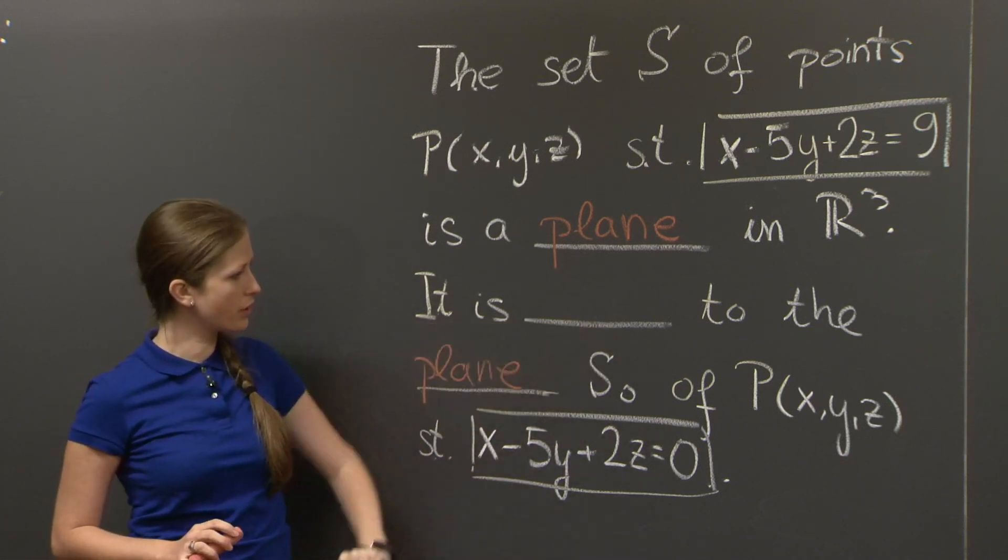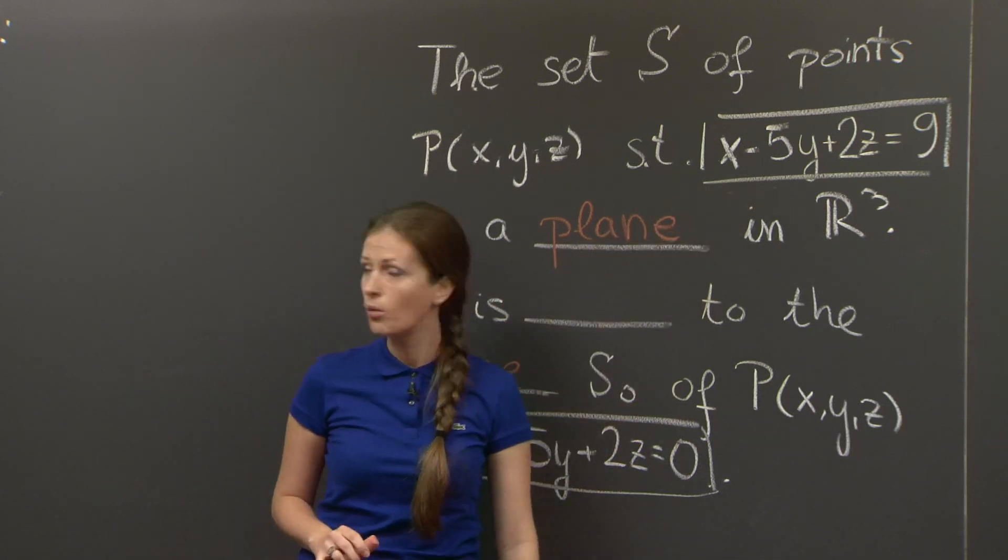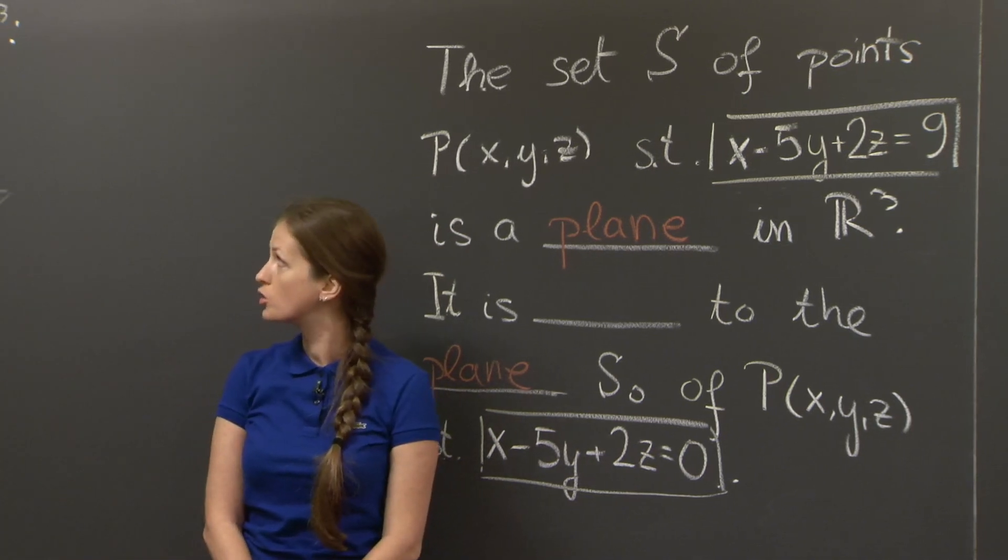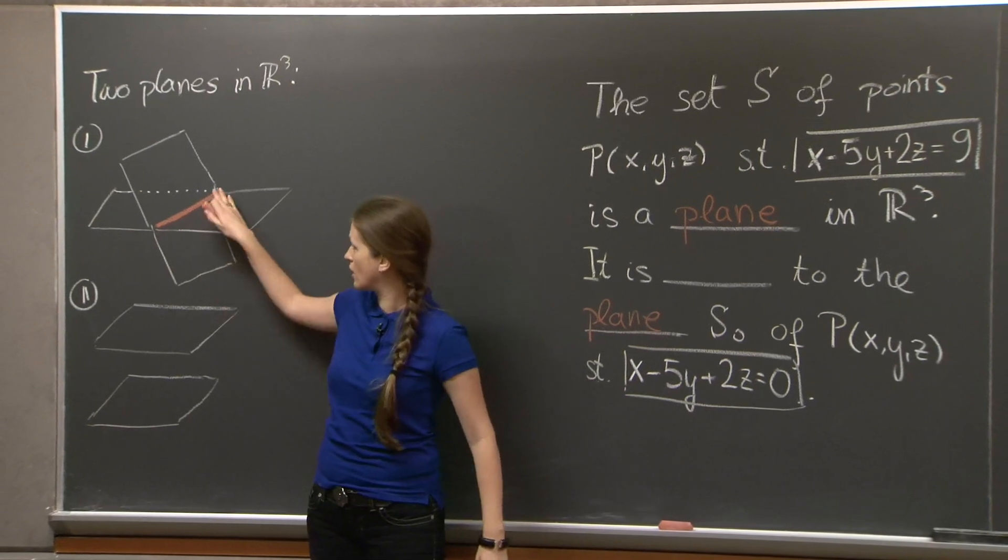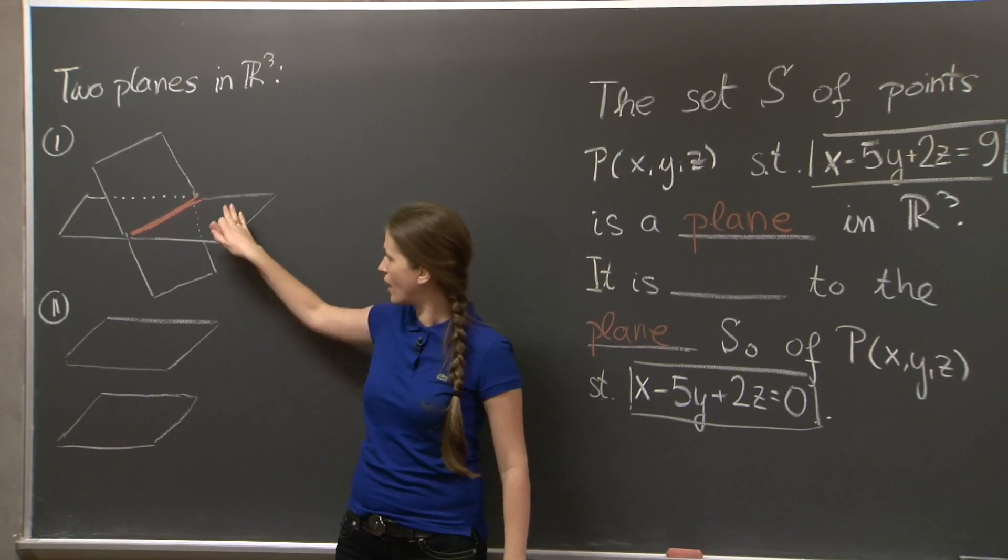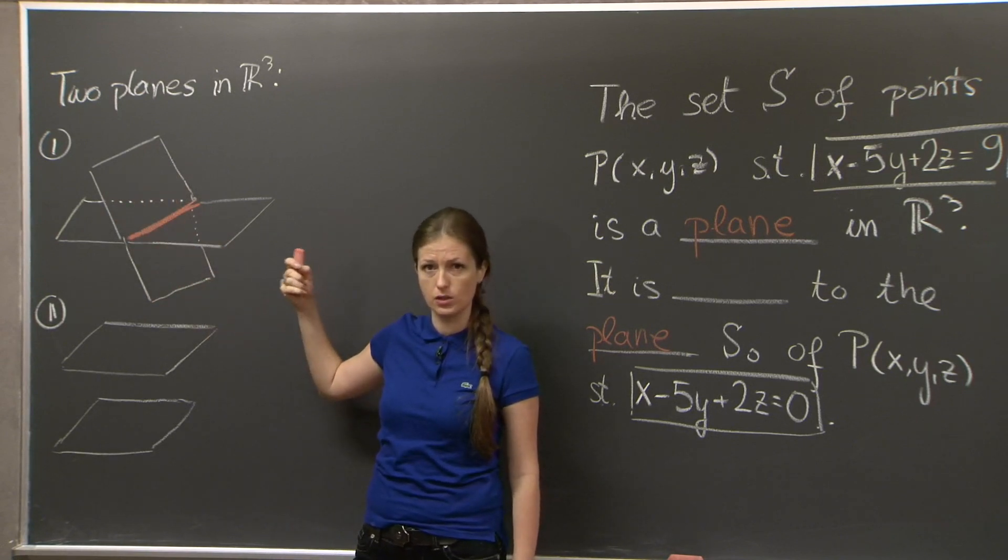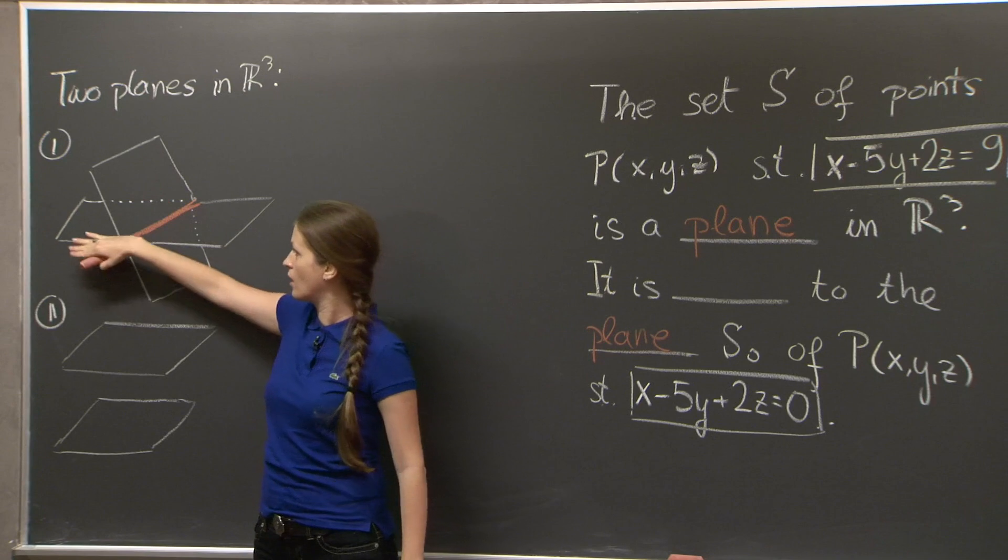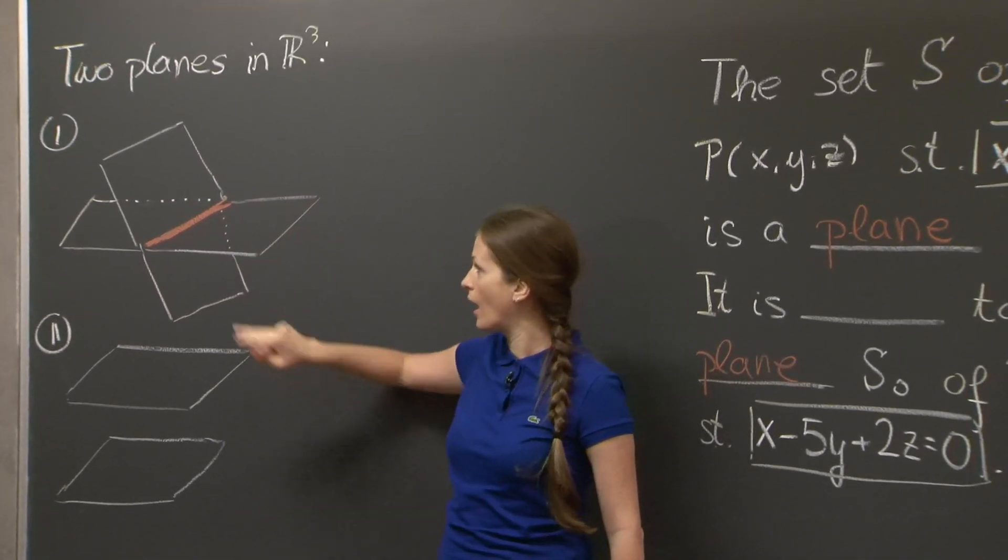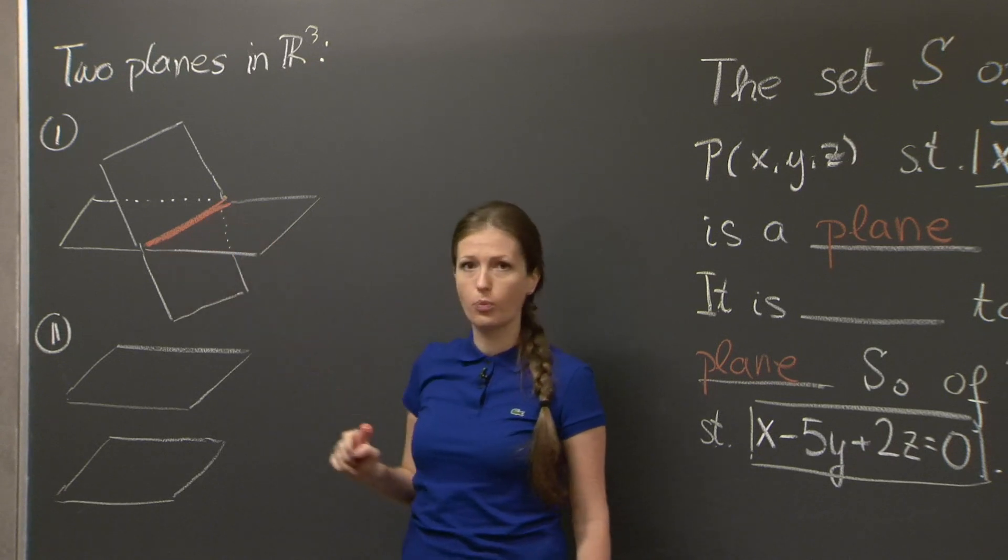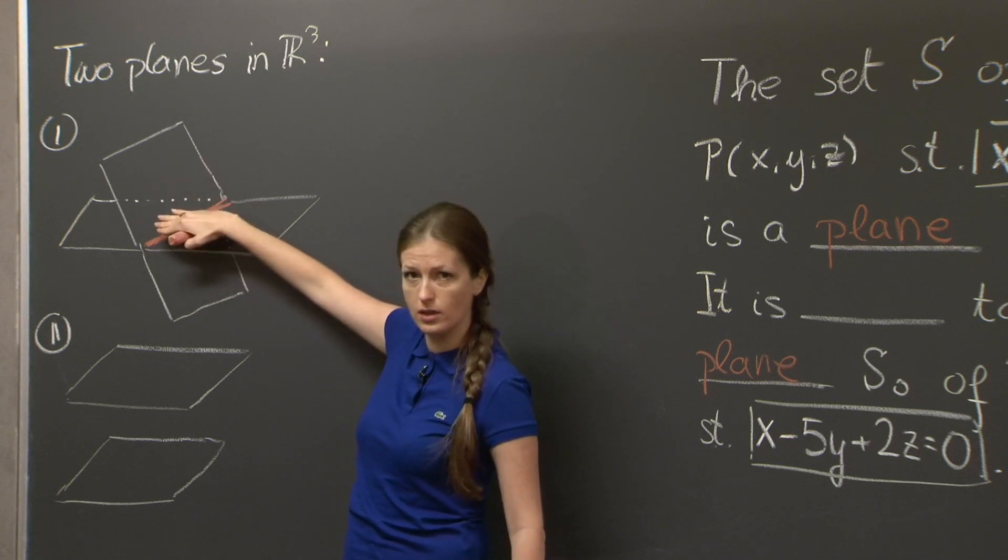Now what's the relation between S and S₀ if they're given by these two equations? Well, first let's look at the general positions in which two planes in R³ can be. First one is that they're intersecting along a line. All points on this plane satisfy the equation of this plane. The points in this plane satisfy the equation of this plane. And the points on the line satisfy the system of both equations.